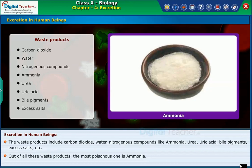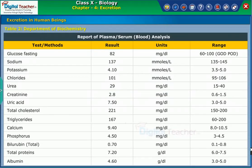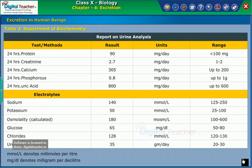Now let us observe the test reports of blood and urine of a person and find out the components present in both blood and urine. The table shown on the screen gives the report of plasma or serum blood analysis. The next table shown on the screen gives the report of urine analysis.